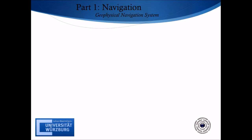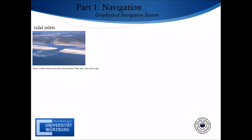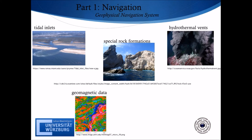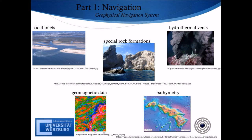Another type of underwater navigation technique is the geophysical navigation system. Here, underwater terrain and surrounding environmental features are used as references. Basically, physical features are observed to estimate the vehicle's position. These features can be tidal inlets, hydrothermal vents, special rock formations, geomagnetic data, or bathymetry, which are used to create a map of the area. It should be noted that this type of navigation technique is still in research and therefore not really in use.